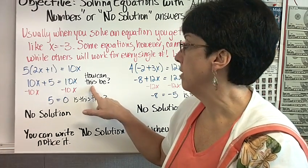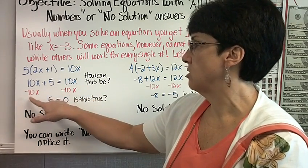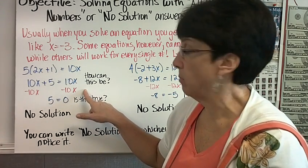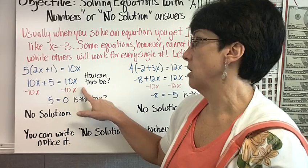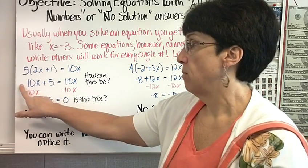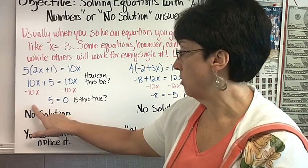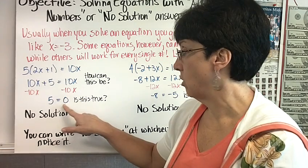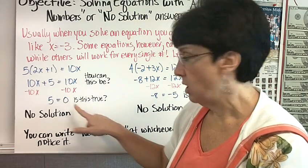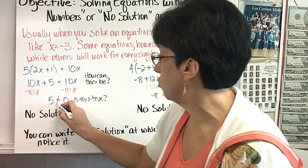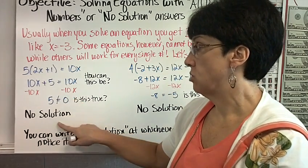We'll show you why. So we look and we say, there's 10x on this side and 10x on this side. They're the same, so I'll just pick one. I'm going to subtract 10x from this side and 10x from this side. Positive 10x minus 10x is 0. Bring down the 5. Positive 10x minus 10x is 0. 5 equals 0. Is this true? No! This is not true. So it's no solution.